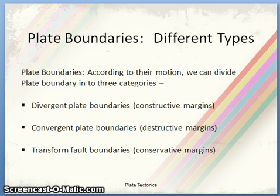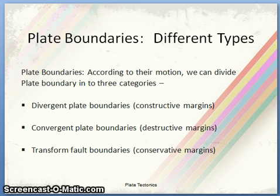There are different types of plate boundaries. According to their motion, we can divide plate boundaries into three categories: the first is divergent plate boundaries, also called constructive margins; the second is convergent plate boundaries, also called destructive margins; and the third is transform plate boundaries, also called conservative margins.